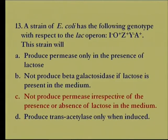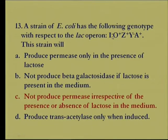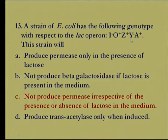Another question: an E. coli strain has the genotype i⁻ o⁺ z⁺ y⁻ a⁺ with respect to the lac operon. The repressor gene is mutated, so it is not able to bind the operator, while other genes are functional. The lac z gene is functional, but the beta-galactoside permease is non-functional. So even if lactose is present in the medium, it will not be transported into the cell.